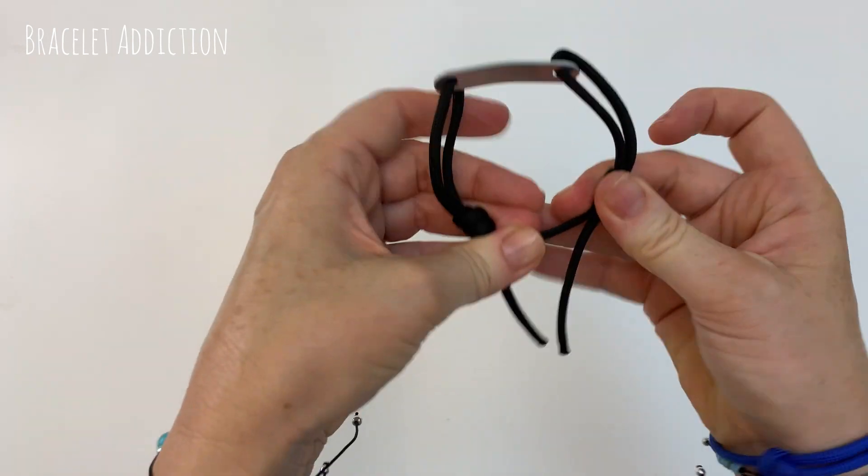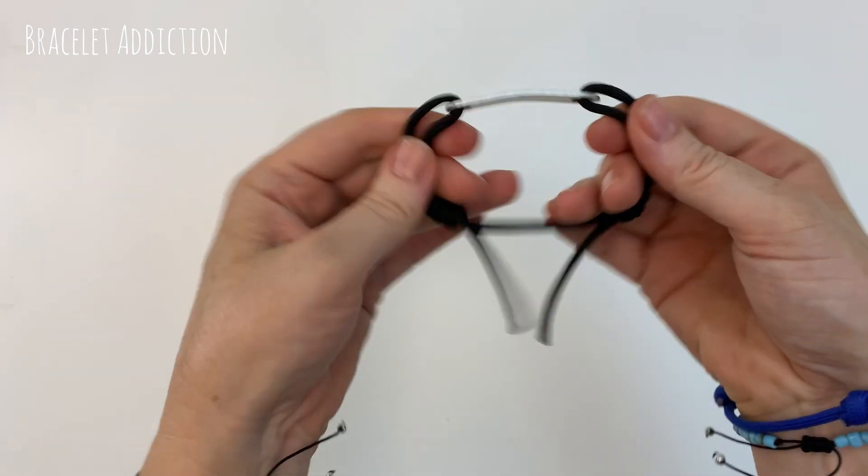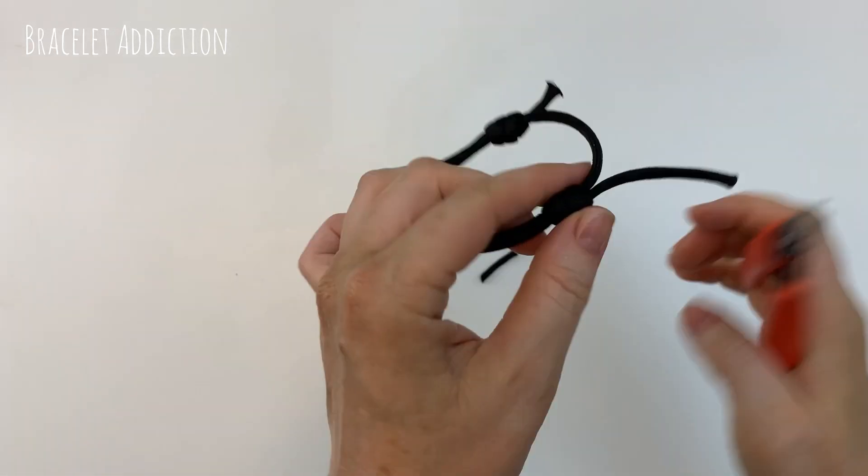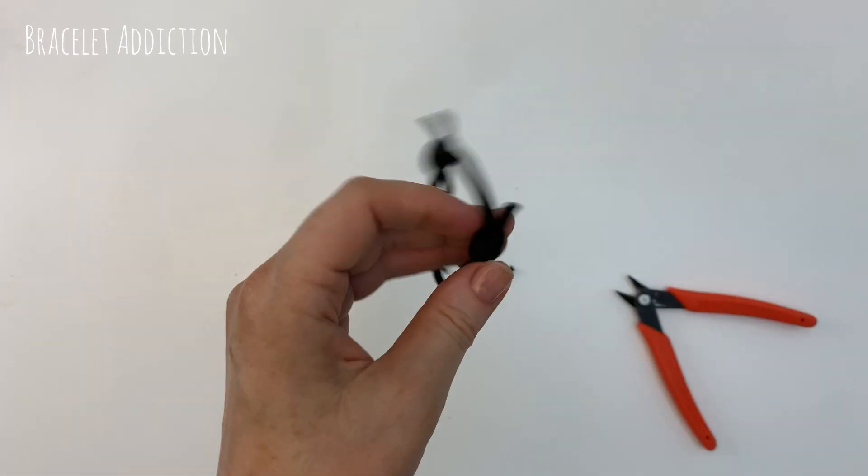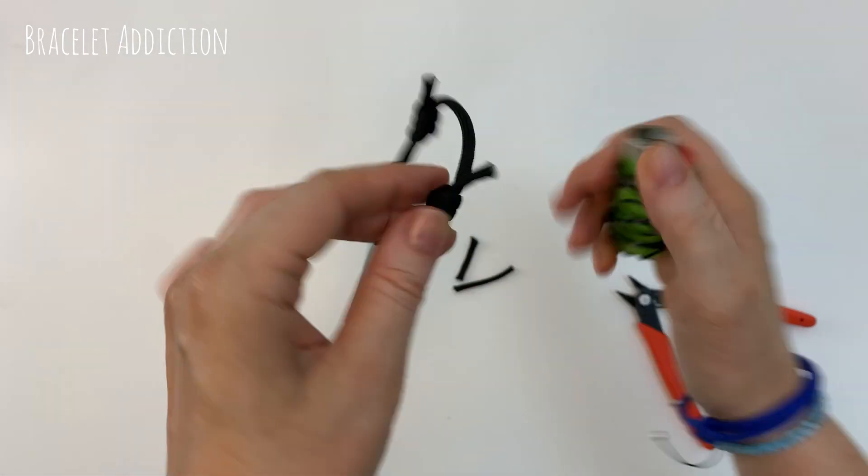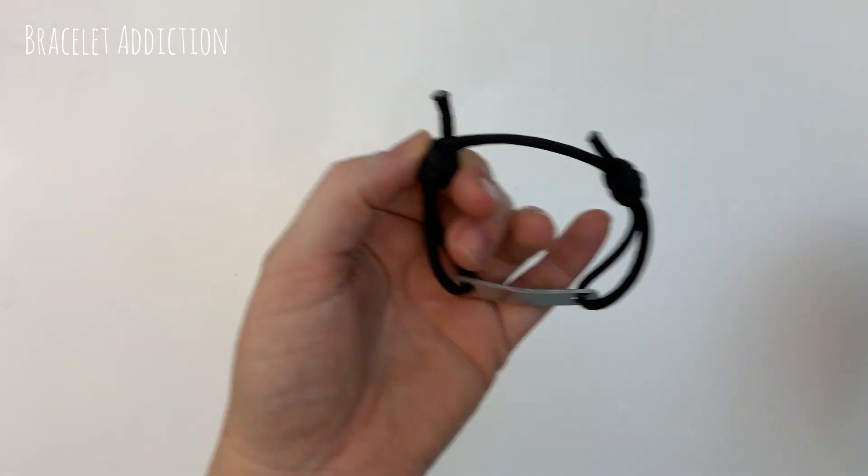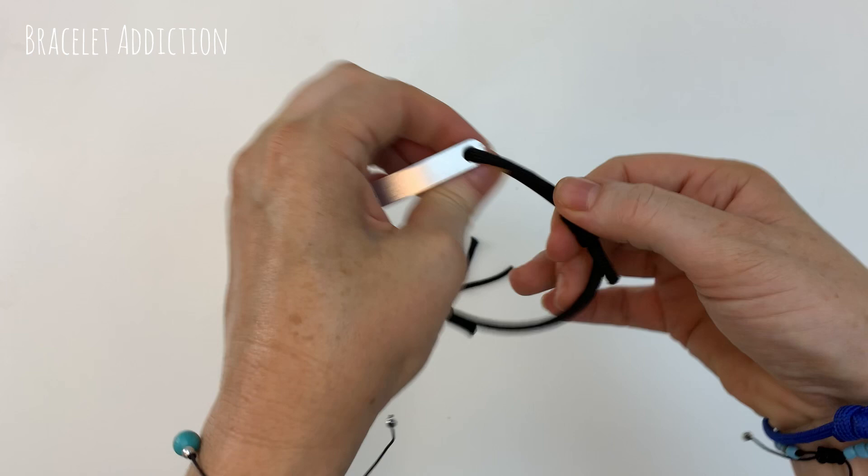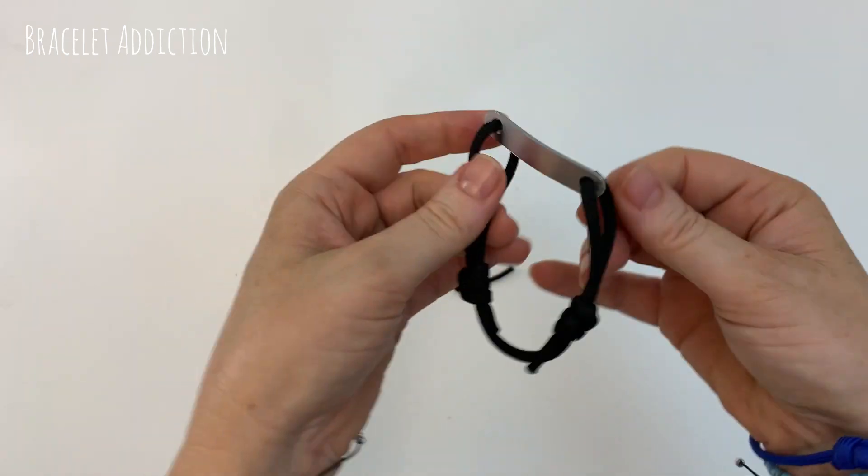But if you're happy with them, then you can go ahead and cut these little tails off. I leave about a centimeter or two. And then singe them with a lighter so they don't fray. So there's your simple adjustable bar or metal plate bracelet.